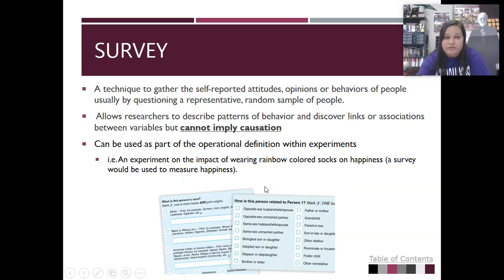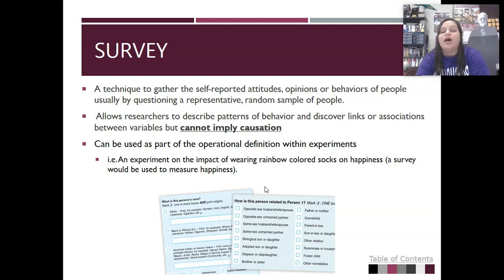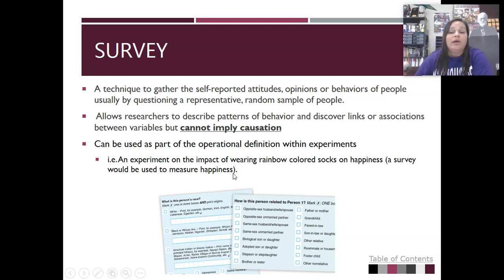Our next method is surveys. A survey gathers self-reported attitudes, opinions, and behaviors by questioning people, generally a representative or random sample of people. They allow researchers to describe patterns of behavior and look for links, but again we can't imply causation just from a survey. The best thing about a survey is that you can gather data from a large number of people — it could be everybody at a high school, or everybody in the United States with the census. It can also be used as part of an operational definition within an experiment. For example, if we're doing an experiment on the impact of wearing rainbow-colored socks on happiness, how would you measure happiness? You could give them a survey.